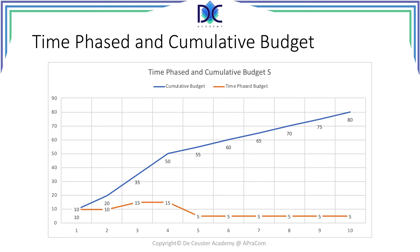It's just a name people gave because of the general appearance of the cumulative budget curve. Both pieces of information are shown in the same graph — the time-phase budget and the cumulative budget, or the S-curve. The blue is the S-curve and the orange is the time-phase budget.